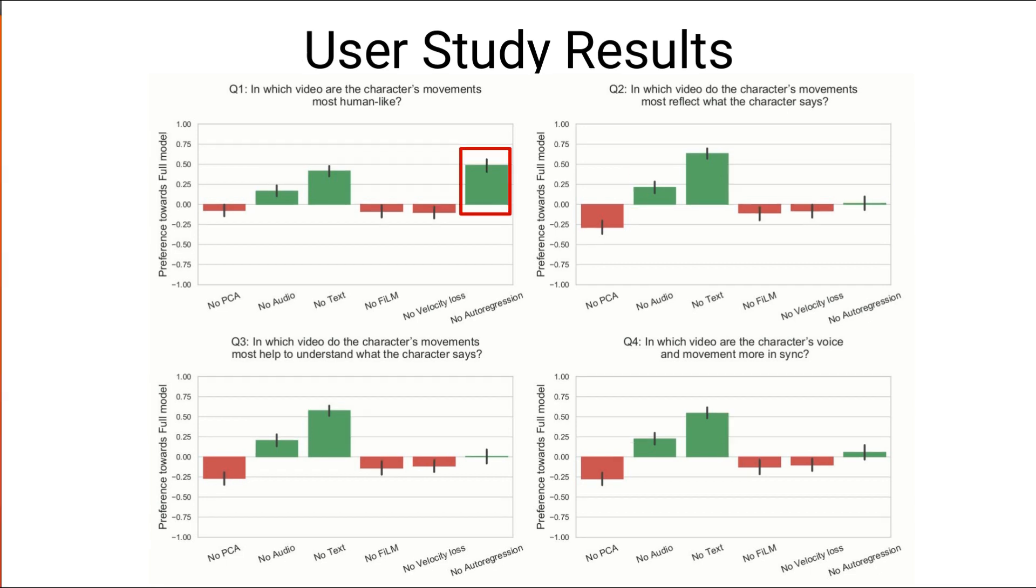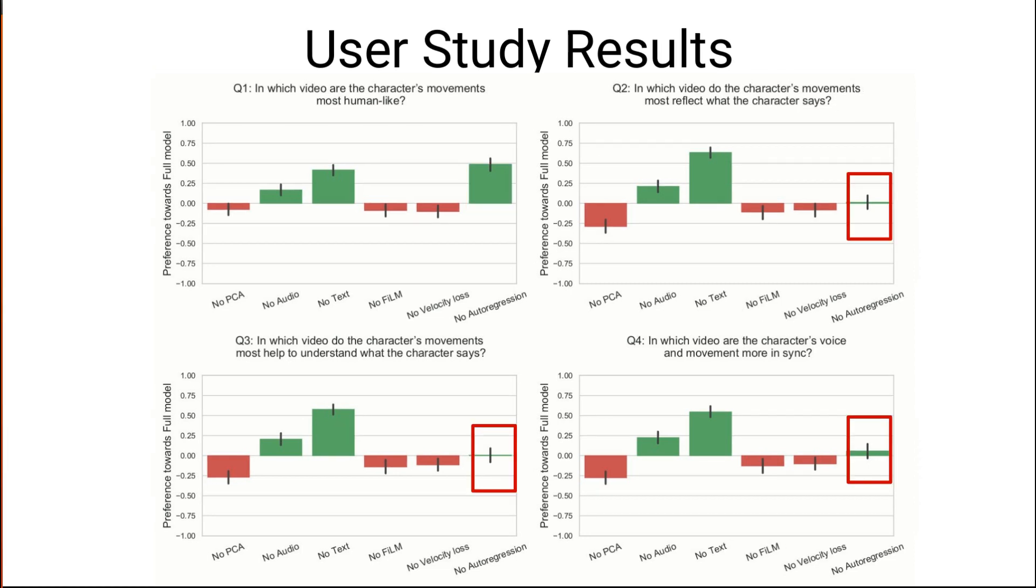The presence or absence of autoregression made a significant difference specifically for perceived human likeness. This indicates that autoregression can be used to ensure smooth and continuous motion, but does not affect the semantic aspects of the gestures.